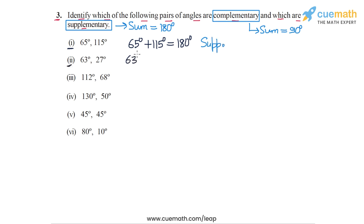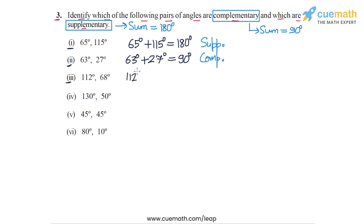In part 2 we have 63 degrees and 27 degrees. 63 degrees plus 27 degrees is equal to 90 degrees, so this pair of angles is a pair of complementary angles because the sum is 90 degrees.